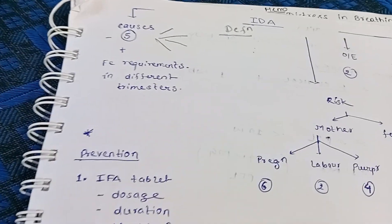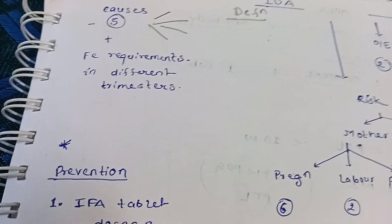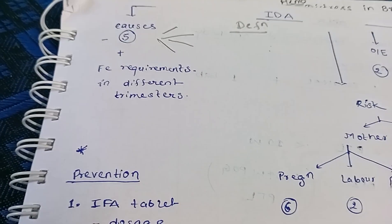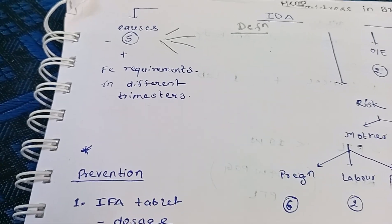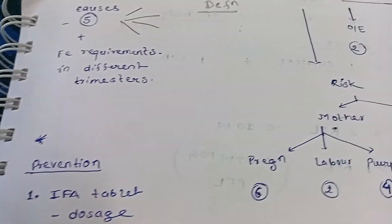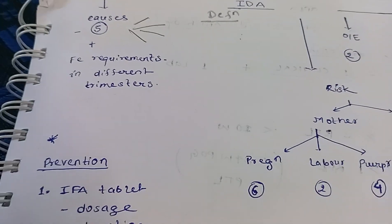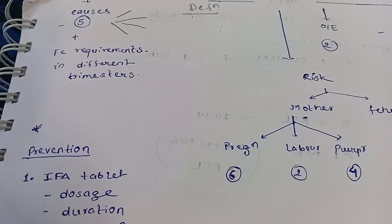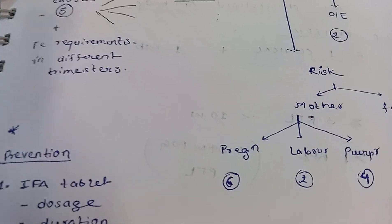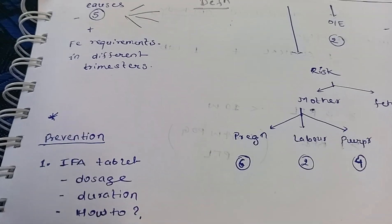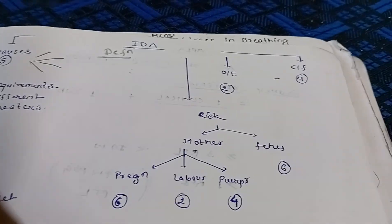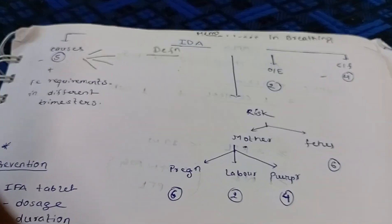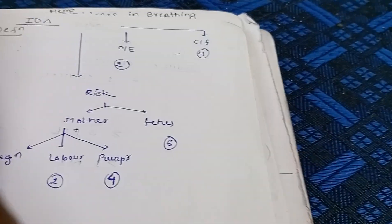Regarding iron requirement in different trimesters: in the first trimester the requirement is 1 to 2 milligram per day; in the second trimester it is 4 to 6 milligram per day; and in the third trimester it increases to 6 to 8 milligram per day.